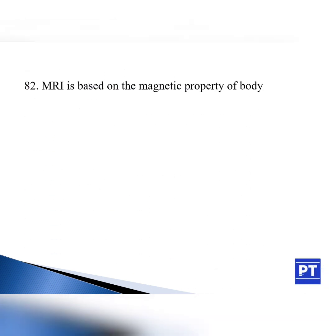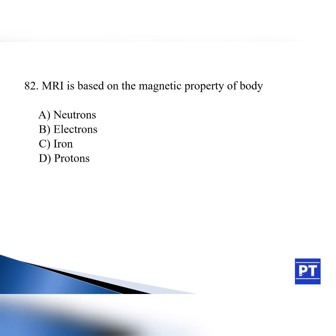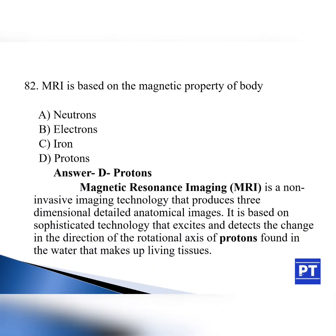Question number 82: MRI is based on the magnetic property of body — option A: neutrons, option B: electrons, option C: iron, option D: protons. The answer is option D, protons. Magnetic resonance imaging (MRI) is a non-invasive imaging technology that produces three-dimensional detailed anatomical images — axial, coronal, and sagittal. It is based on sophisticated technology that excites and detects the change in the direction of the rotational axis of protons found in the water that makes up living tissue. Approximately 90% of the human body comprises water (H₂O), and MRI determines based on the protons of hydrogen.